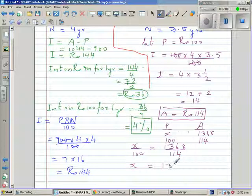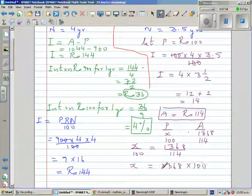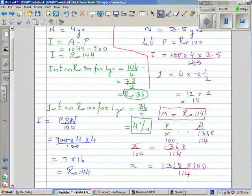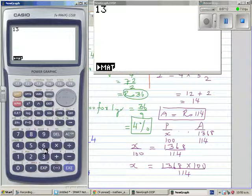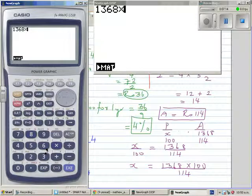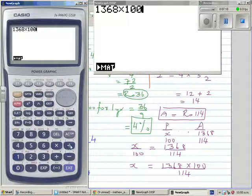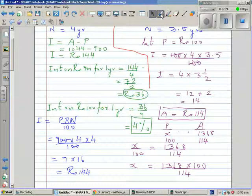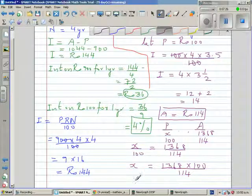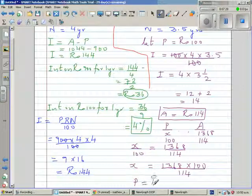is 1,368 times 100 divided by 114. So now using a calculator, you can do without a calculator. So it's 1,368 times 100. You can use a simple calculator, divided by 114. That's 1,200 rupees. So the principle is rupees 1,200.